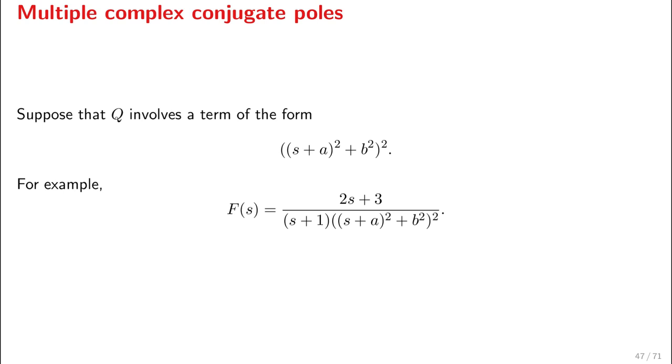These are cases where we have a double pole. We will not be focusing on poles of higher multiplicity. Take, for example, that the denominator involves terms of the form (s + a)² + b² squared. So -a ± jb is a double pole. For example, you have this function 2s + 3 divided by that denominator over there.